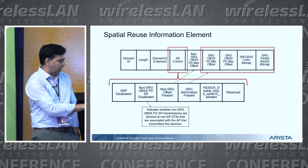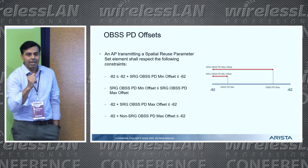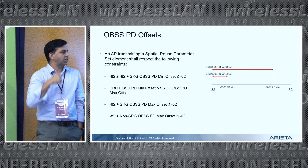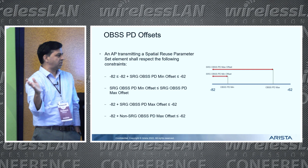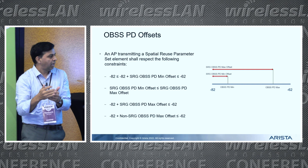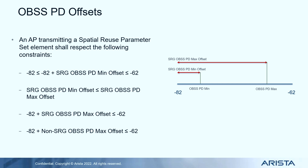Looking at the thresholds again: the bounds are minus 82 and minus 62. The OBSS PD min offset is the delta between the minimum and the actual PD min, so minus 82 plus the PD min offset gives the lower limit, and minus 82 plus the PD max offset gives the upper limit. For example, if PD min offset is minus 3, you raise the sensitivity to minus 79; if the max offset is 20, you raise the upper limit to minus 62. If you receive a transmission from another BSS with RSSI within these two bounds, you are eligible to use this opportunity for spatial reuse.